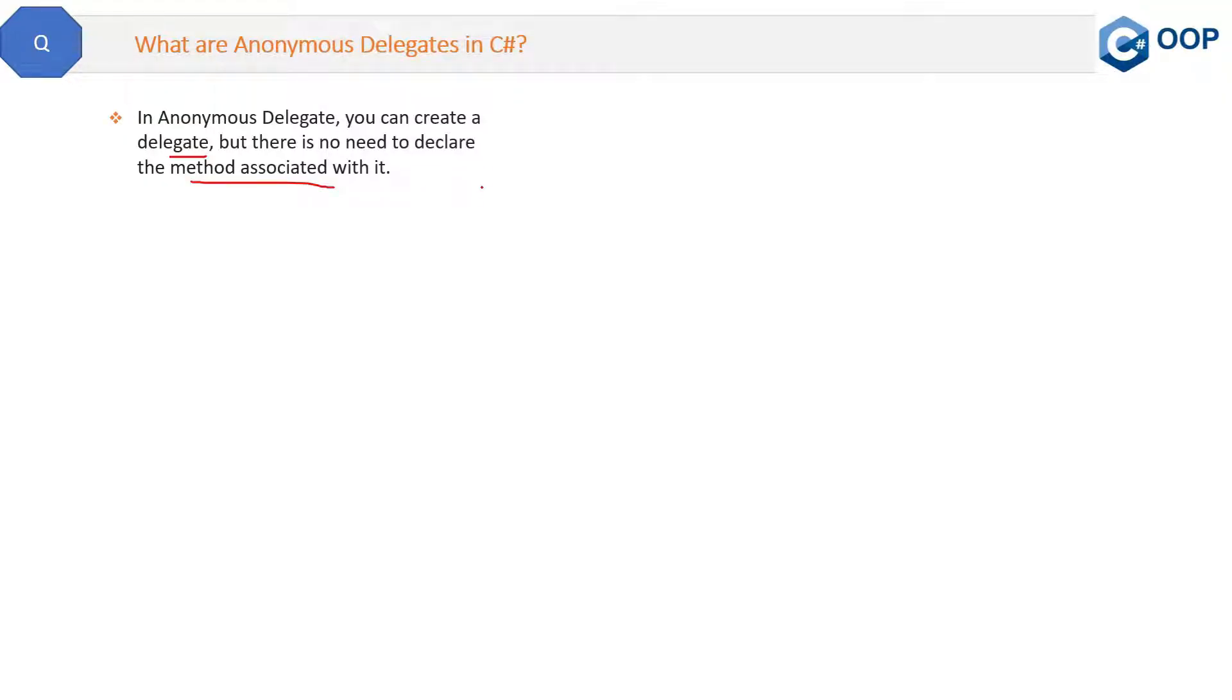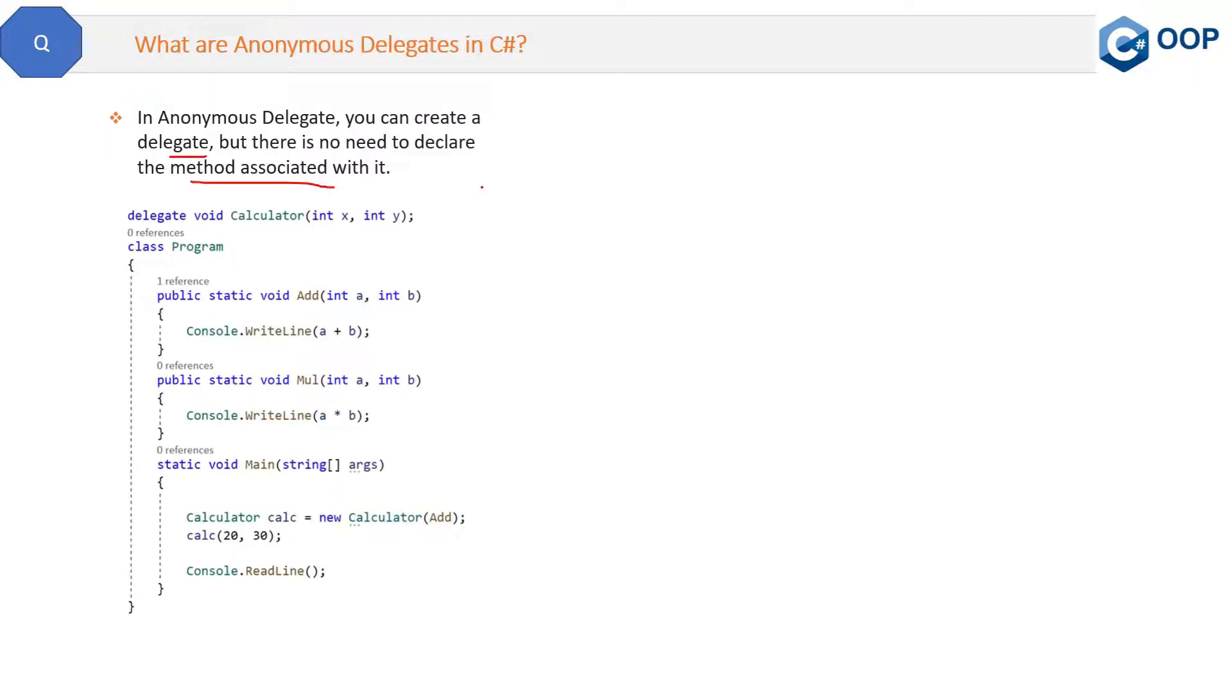So there will be no concrete method in the case of the anonymous method. What does it mean? Now see, here is a normal delegate. This is a normal delegate, not an anonymous delegate. We have methods here like this.